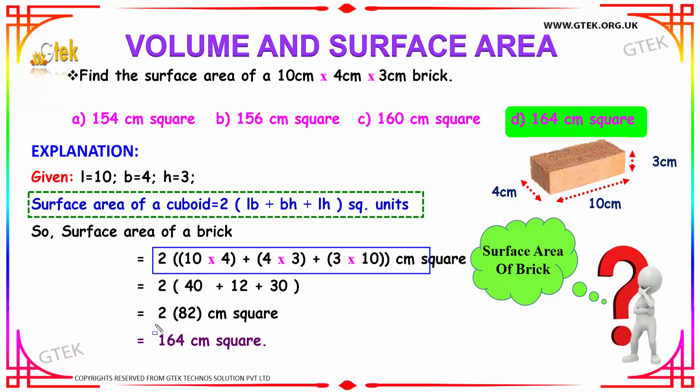Summing up, you get 82 multiplied by 2, you get 164 cm². Thus, your answer is option D, 164 cm².